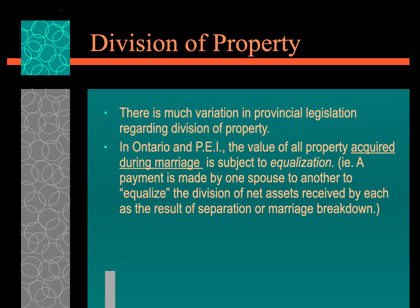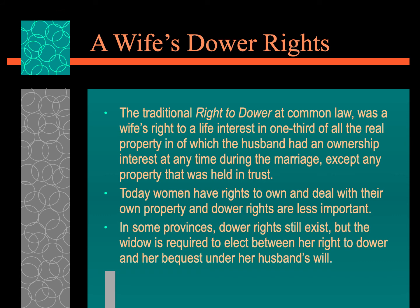There is much variation in provincial legislation when it comes to division of property — you want to check what each province has, where the marriage took place, and where the couple lived. The wife's dower rights at common law was the wife's right to a life interest in one-third of all real property the husband had ownership of. Today, however, women have rights of their own in dealing with all property, so dower rights are less important, though they still exist. The widow is required to elect between her dower right and the bequest of her husband's will.